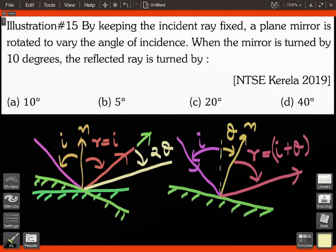Right, because it has one angle theta and again one more angle theta. So the reflected ray is turned by - I can write deviation is equal to two theta.